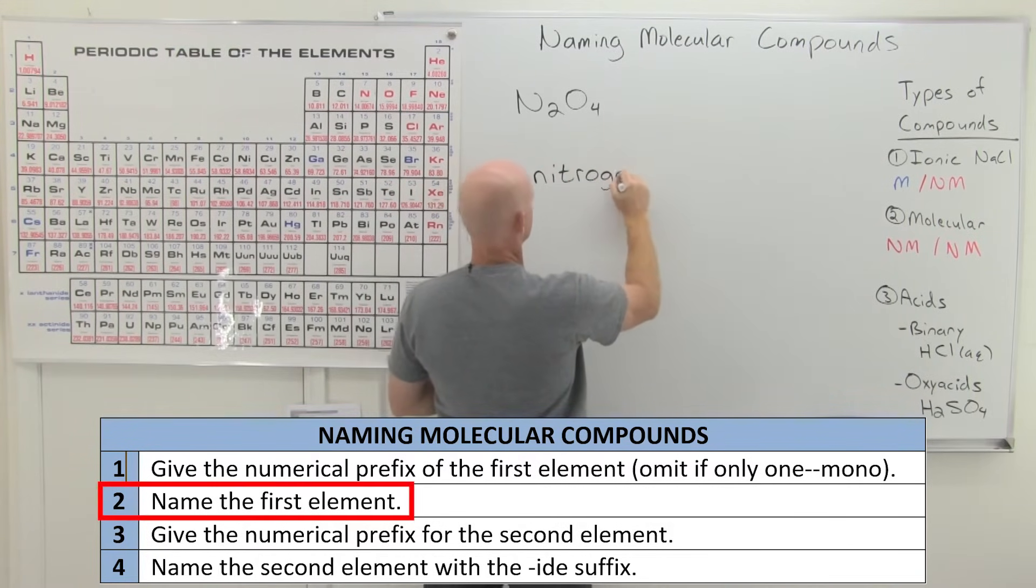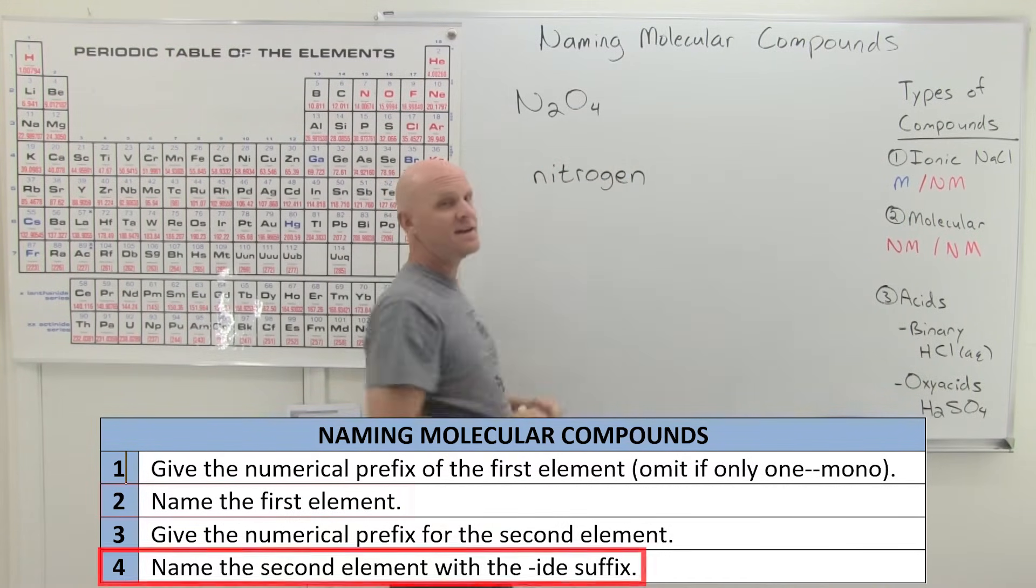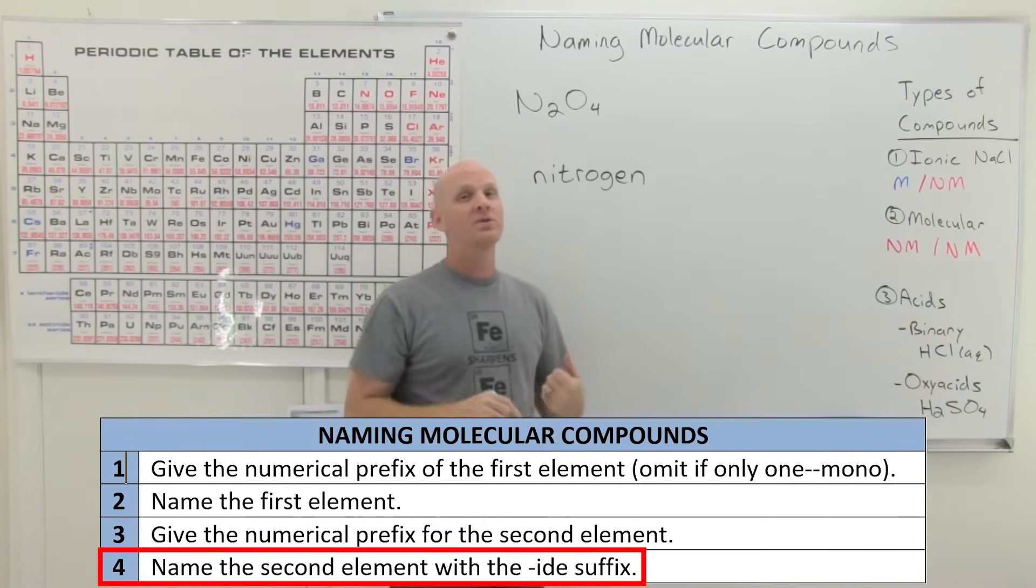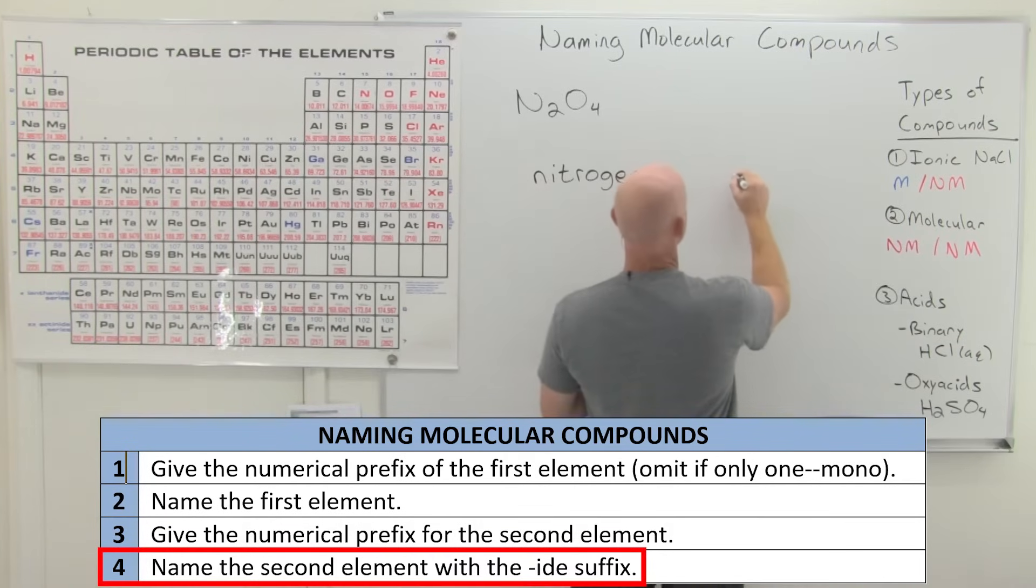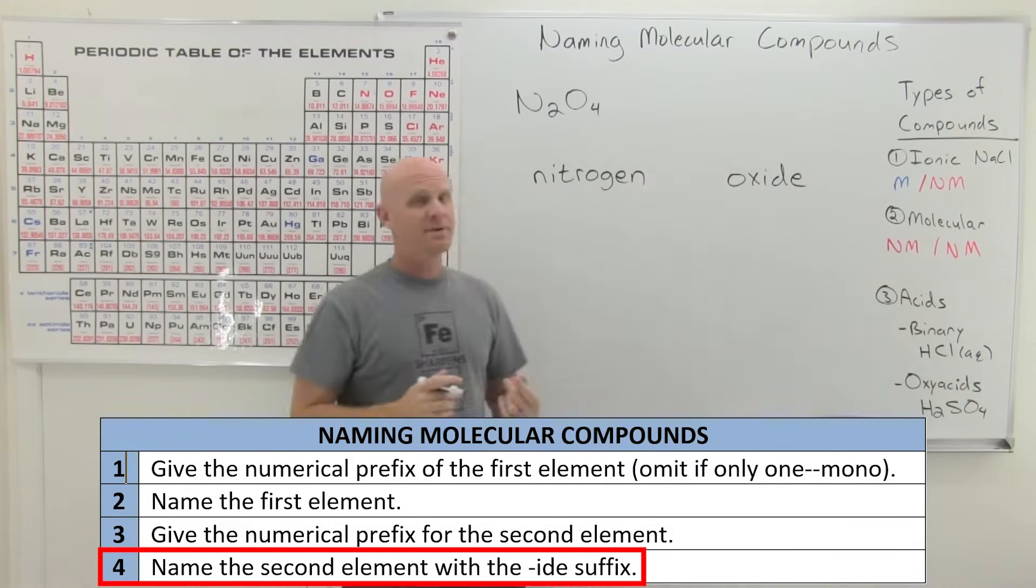And we'll name that first element. We'll say nitrogen. And when you name the second element in your binary molecular compound, you are going to end it with an IDE ending. And so this part is what is similar to what we saw with naming ionic compounds.